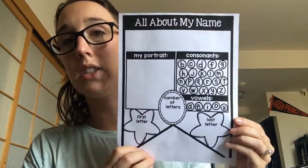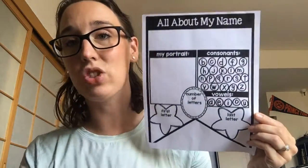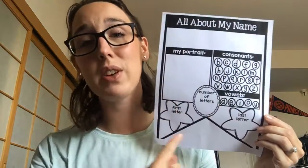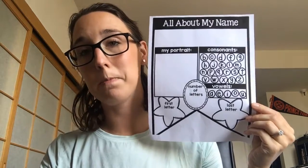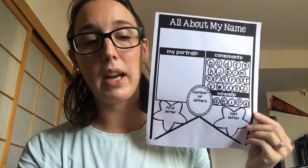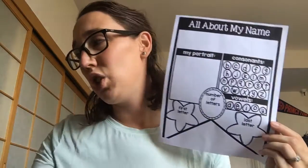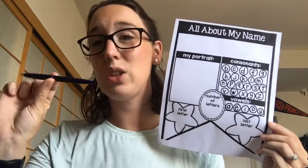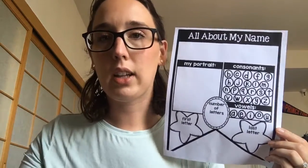So today we are going to be working on this all about my name page. There are a couple of different things on this page that you are going to be working on. I'm using highlighters for some of the things and crayons for some of the things. You may also want to use a pen or a pencil, but I'm going to start with crayons and highlighters.